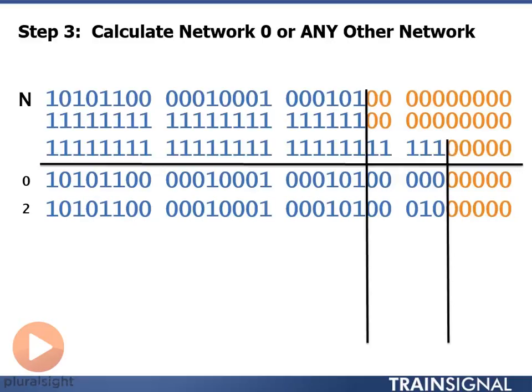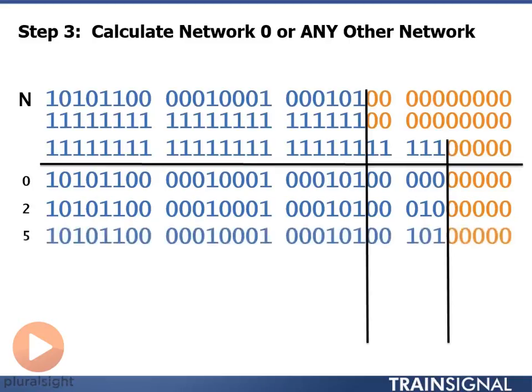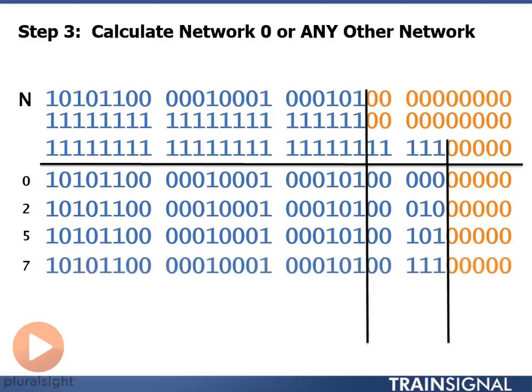Network number 2 - we converted 2 to binary, put it into our 5 borrowed bits, put all zeros in our host portion, and got our network address. Network number 5 - we convert 5 to binary, put it into our borrowed bits, put all zeros into our host portion, and get our network address. Network number 7 - once again, convert 7 into binary, put it into our borrowed bits, put all zeros into our host portion, and get our network address.